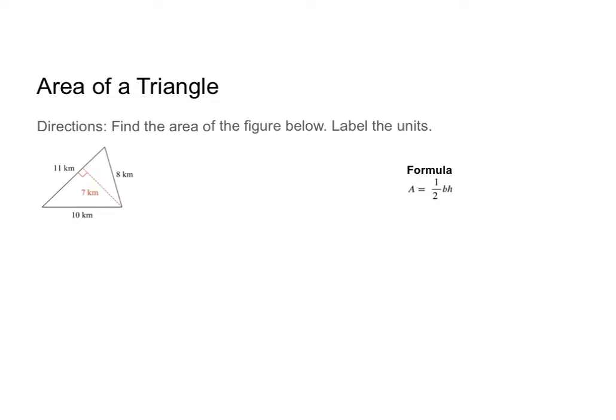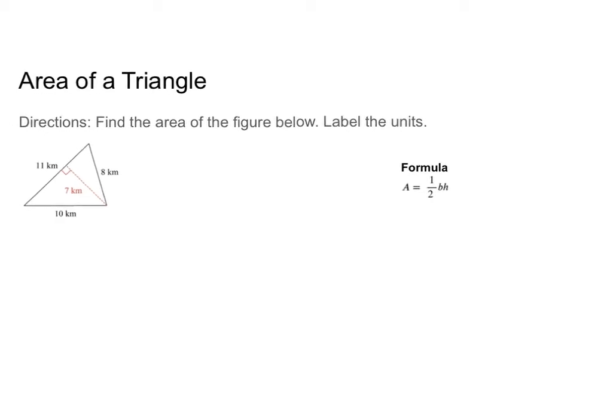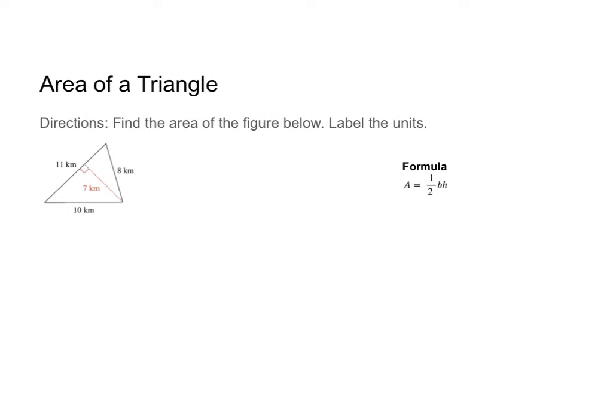Here we want to find the area of the triangle and label the units. In order to find the area, first we want to identify our formula. So the formula for a triangle is A equals half base times height.